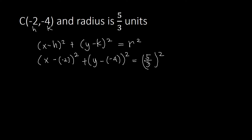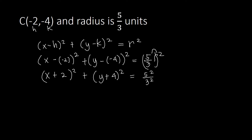Simplifying: negative minus negative gives positive, so (x − (−2)) becomes (x + 2)², and (y − (−4)) becomes (y + 4)². For the right side, we distribute the power: (5/3)² = 5² over 3² = 25 over 9. So our final standard equation of the circle is (x + 2)² + (y + 4)² = 25/9, which cannot be reduced further.